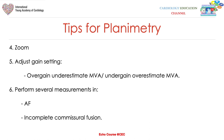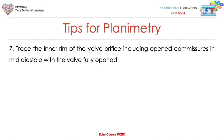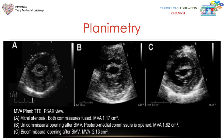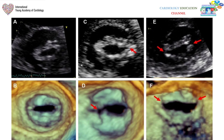Perform several measurements: in sinus rhythm, take three measures and average them or take the narrowest. In atrial fibrillation, take five to ten beats. If there is incomplete commissural fusion, take multiple measurements and take the narrowest or average them. Trace the inner rim of the valve orifice including the open commissures in mid-diastole with the valve fully open, as shown in the example images.